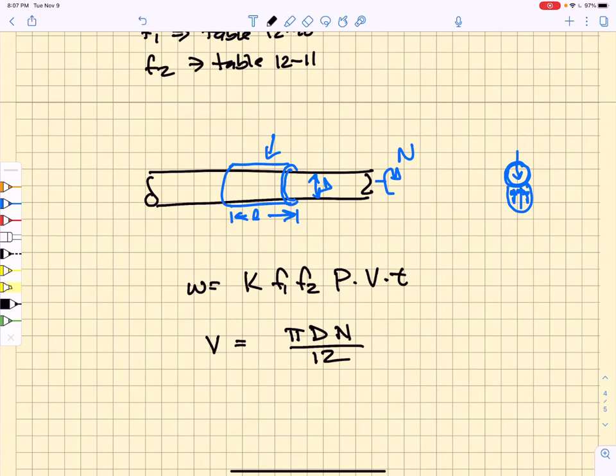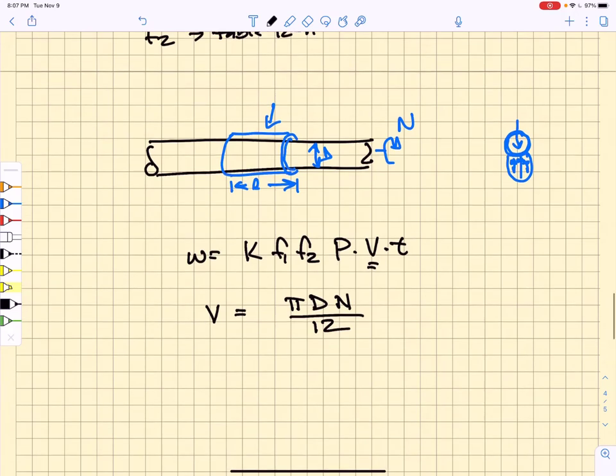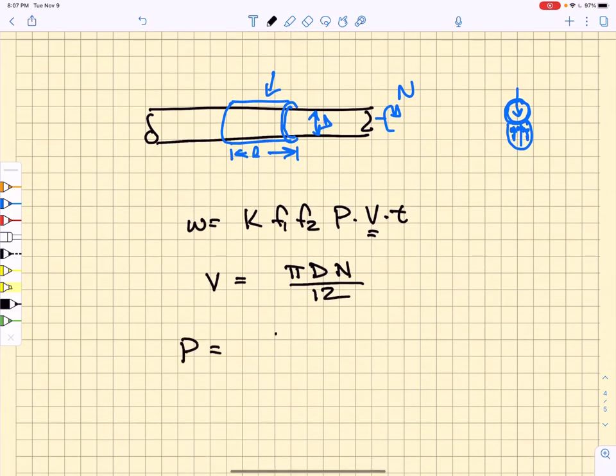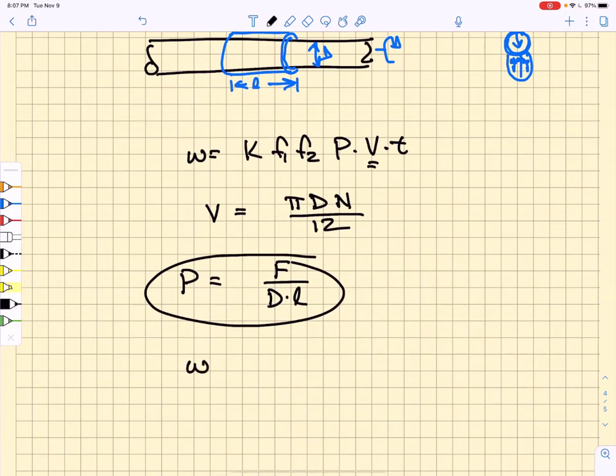The average pressure P is just going to be our force divided by the diameter of the shaft times the length of the bearing. That's the same thing we did for journal bearings. And so our w is just going to be equal to f1·f2·k times F·π·n over 12·L, all of that stuff times t, which is the service time.